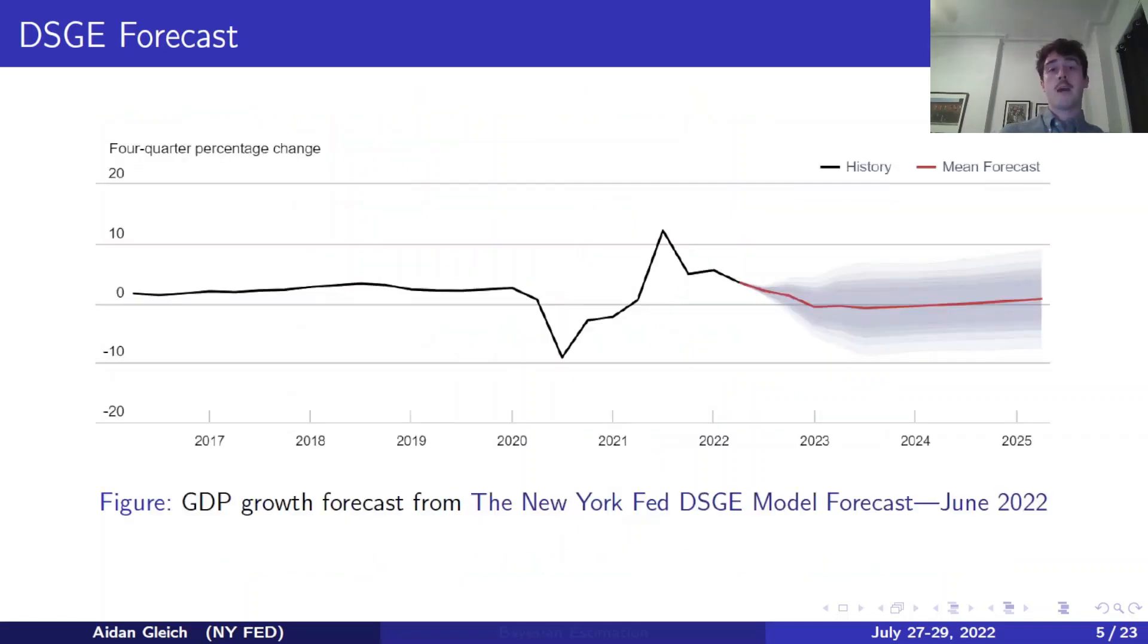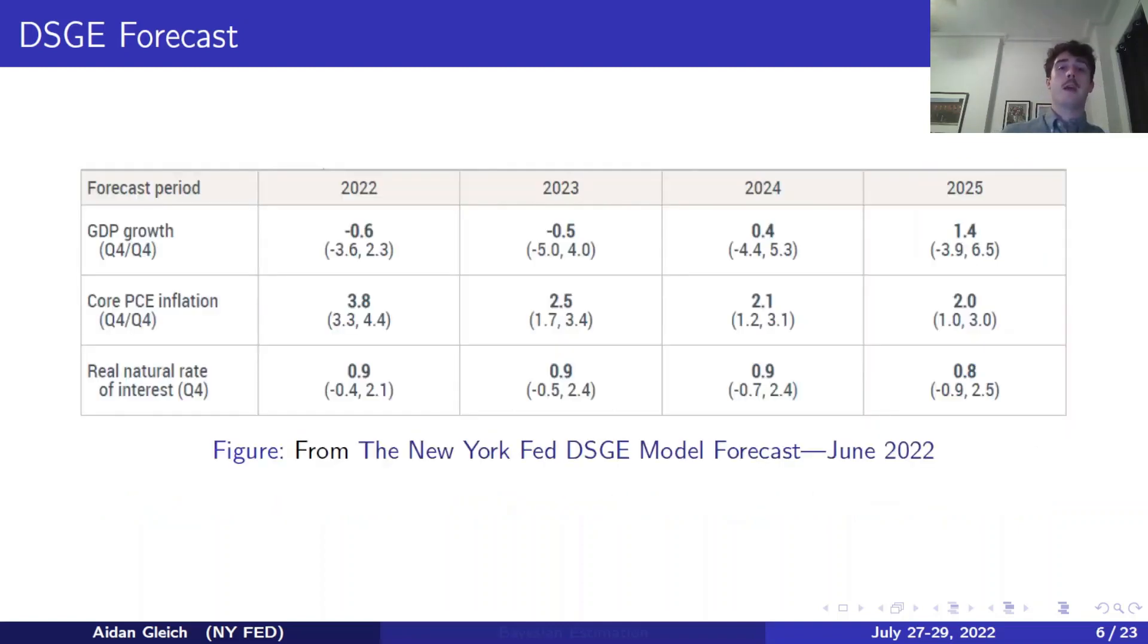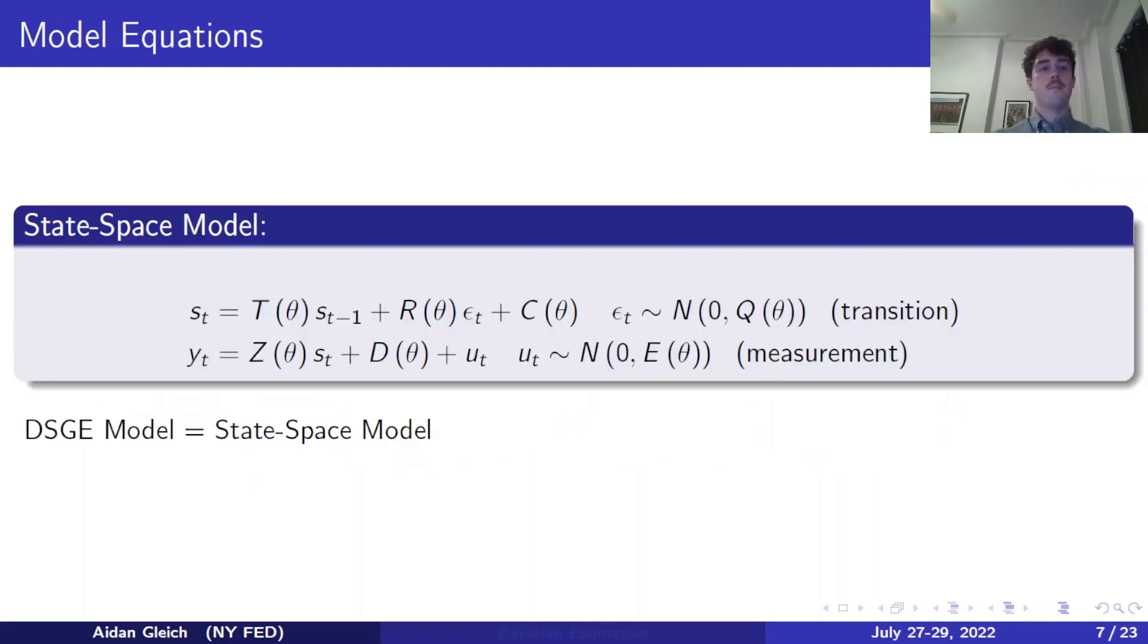We also forecast more familiar variables such as GDP growth. And here, our June forecast is a bit pessimistic. And we can also see a table of forecasts from 2022 through 2025 of the common variables: GDP growth, core PCE inflation, and the real natural rate of interest. Now, how do we create these forecasts?